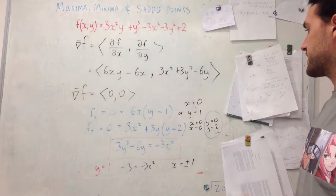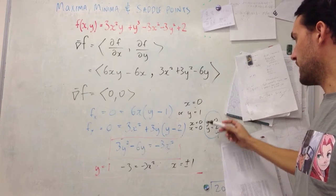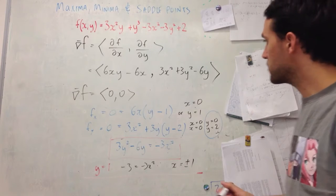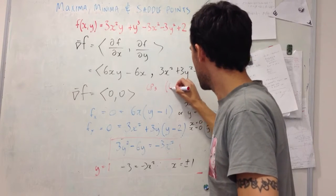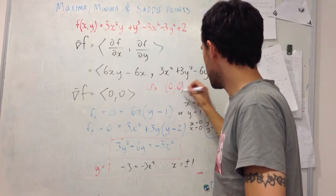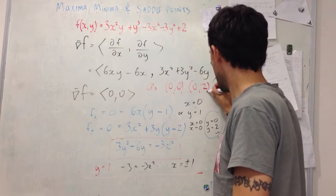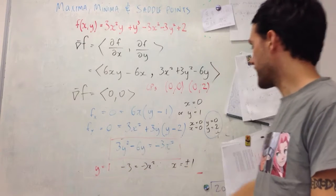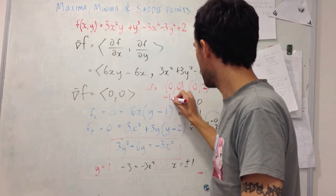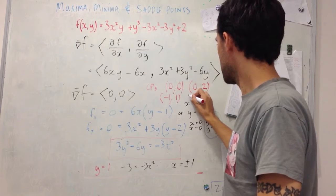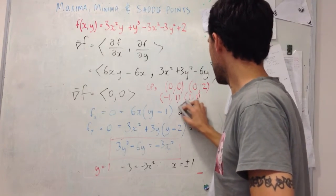Putting all of this together, the critical points are: (0, 0), (0, 2), (−1, 1), and (1, 1). I need to evaluate these critical points using the second derivative test.